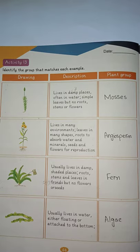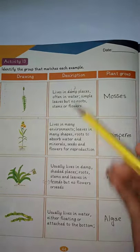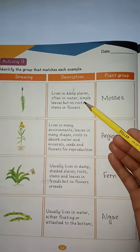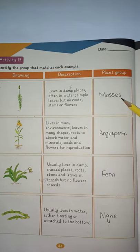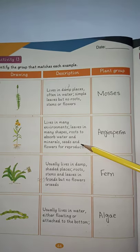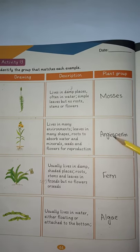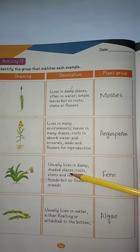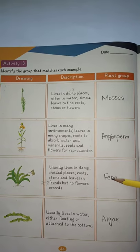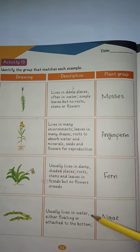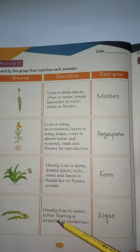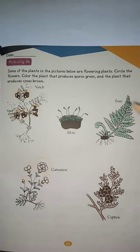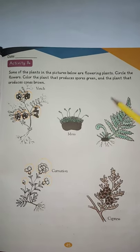Activity number 13 is to identify the group that matches each example. First one lives in damp places, often in water, with simple leaves but no roots, stems or flowers — the plant group is mosses. Lives in many environments, leaves in many shapes — ferns, usually in damp shaded places. Usually lives in water, either floating or attached to the bottom — that is algae.